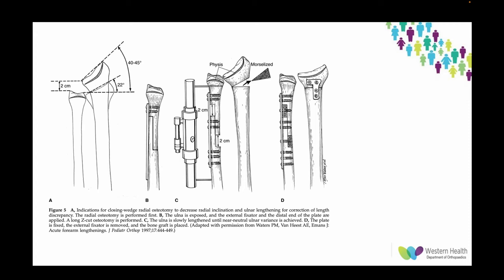This slide from the JS article shows how they propose doing that — a Z-lengthening over a frame, which is then removed, using the closing wedge graft to fill in the lateral closing wedge of the radius.